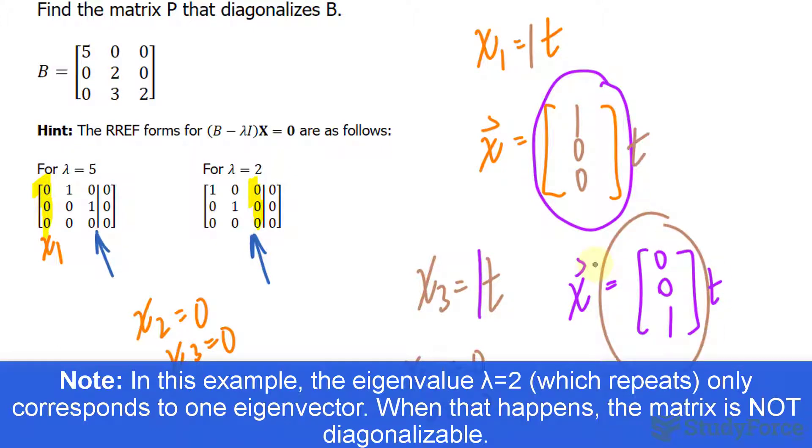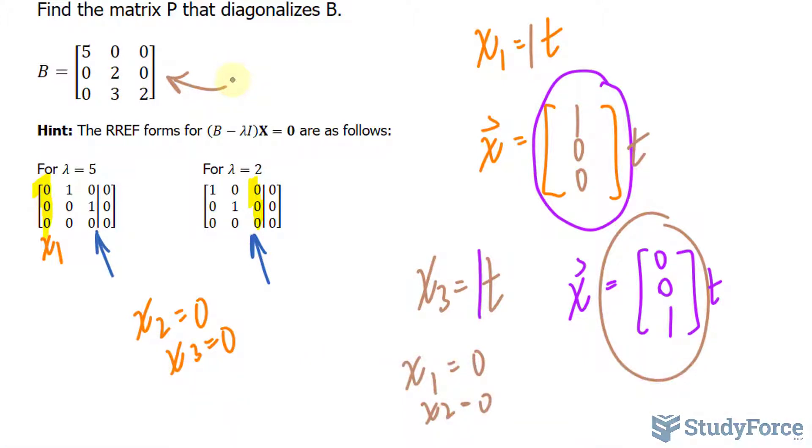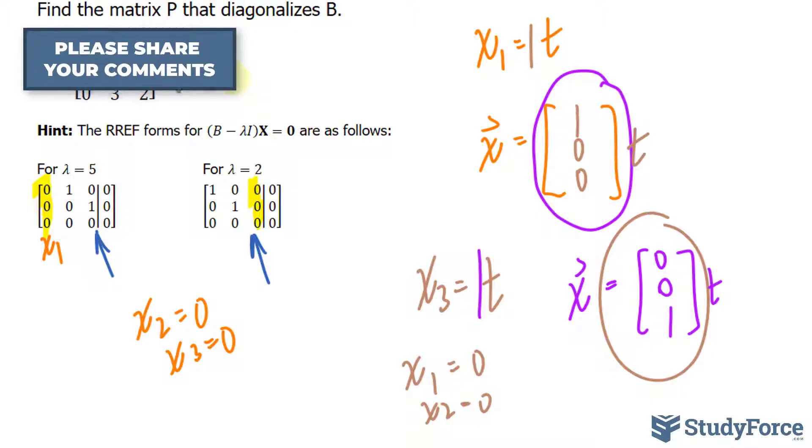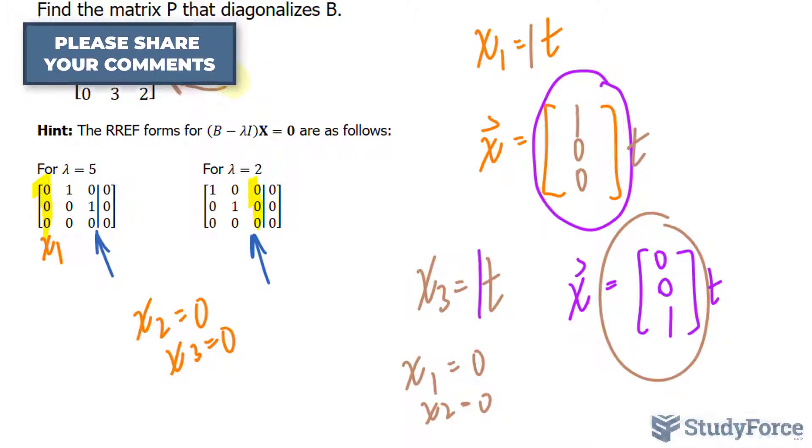We found two eigenvectors, but this is a 3 by 3 matrix, and that's a problem. It turns out that we don't have enough linearly independent eigenvectors. We needed 3, but we got 2. Therefore, this matrix B is not diagonalizable.